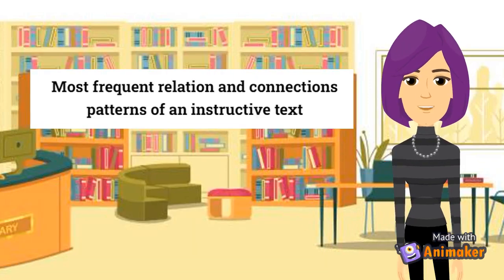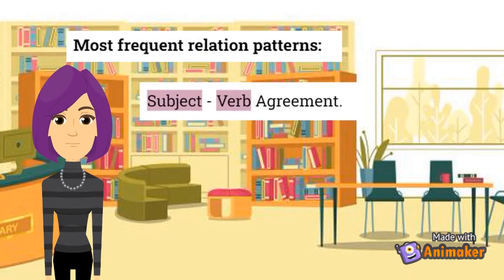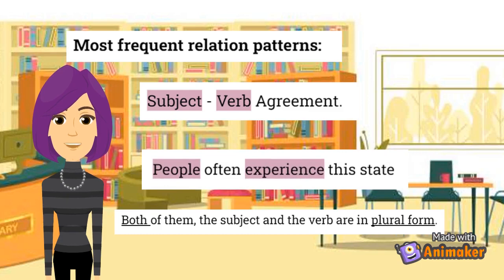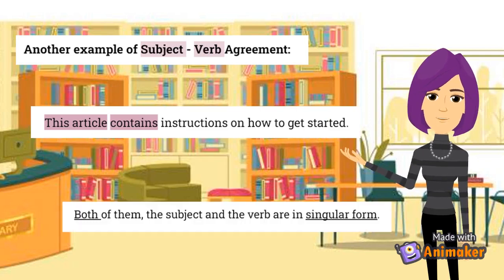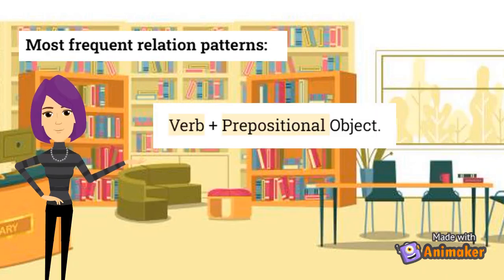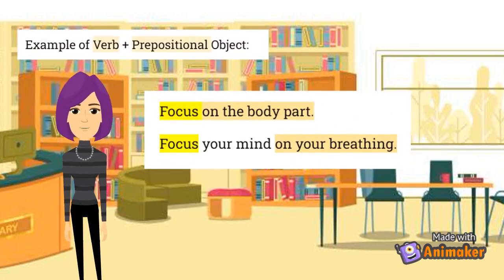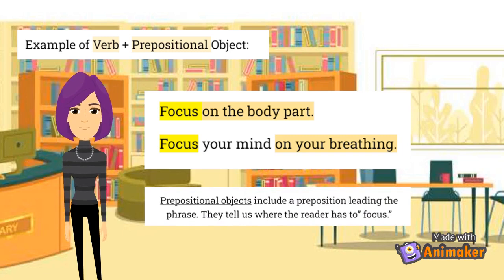Finally, we are going to analyze and exemplify the most frequent relations and connections of this instructive text. Regarding relations, we can find two examples of subject-verb agreement. Here, the noun "people" is in plural form; consequently, the verb "experience" is also in plural form — therefore, there is subject-verb agreement. In the next example, the noun "article" is in singular form and the verb "contains" agrees with the form of the noun. Let's analyze another frequent relation, which is the verb and its prepositional object. Here we have identified two examples: in both sentences, the verb "focus" is related to the objects "on the body part" and "on your breathing," respectively. The objects are prepositional, as they include a preposition that answers where the reader has to focus.